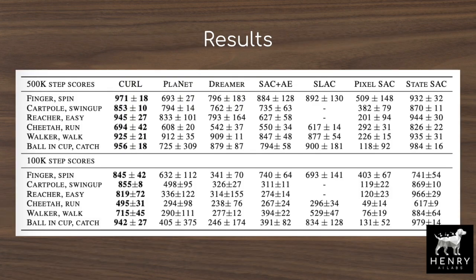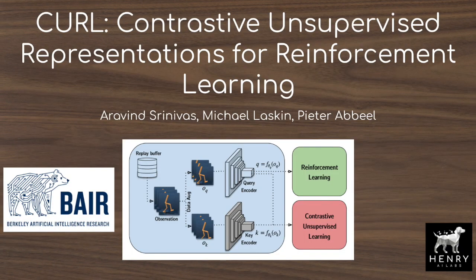This enables successful control from only pixel inputs and no physical state inputs such as the angular velocity on a given robotic joint, enabling further transfer learning from visual representations for robotic control tasks.